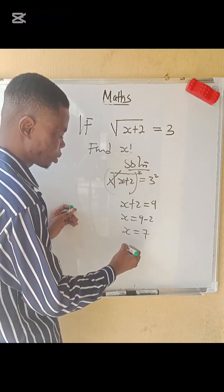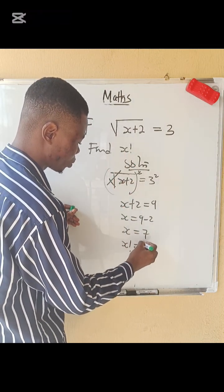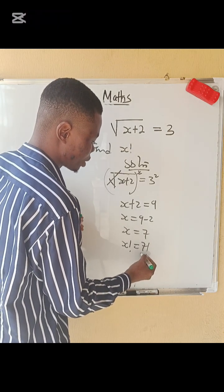But we are asked to find x factorial. So x factorial equals 7 factorial, which means expand it down to one.